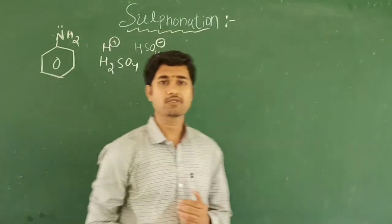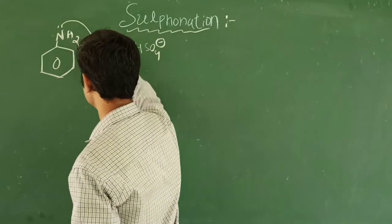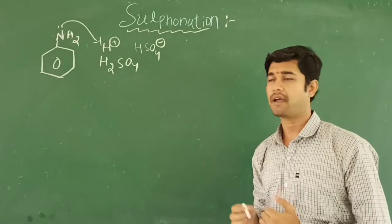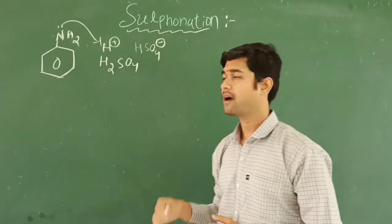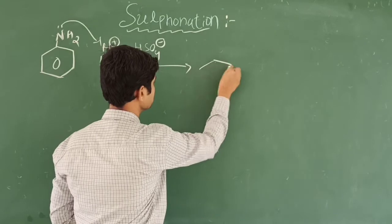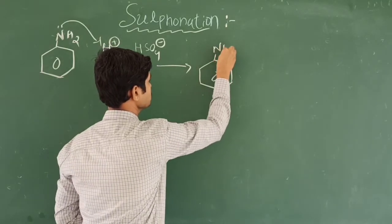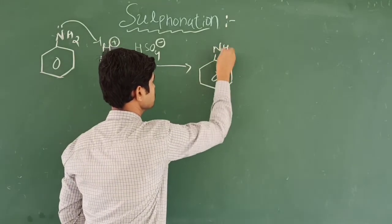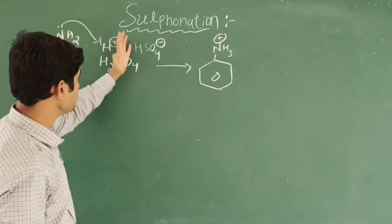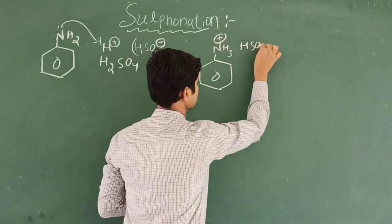Here the lone pair of electrons on the nitrogen attacks the hydrogen, and then it becomes anilineum ion. So this is called the anilineum ion.